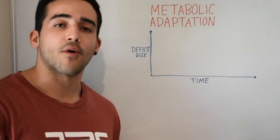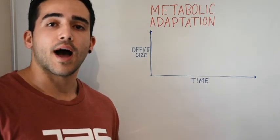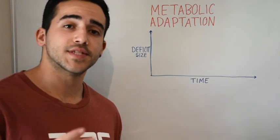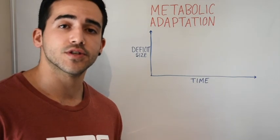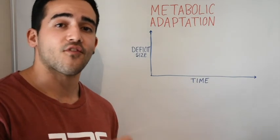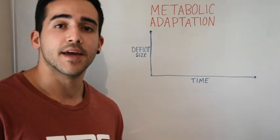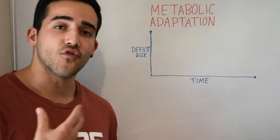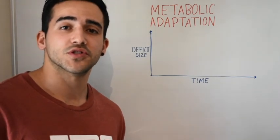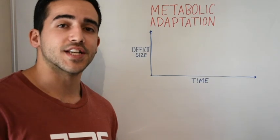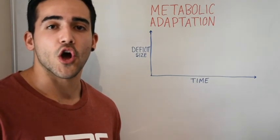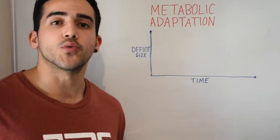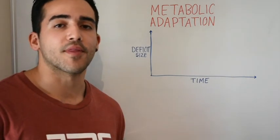The further you move from that set point, the more pronounced the metabolic adaptation will be. If you lose 10 kilos after 10 years of sitting at 80 kilos, then your body is going to be fighting really hard to pull you back up to 80 kilos because that is your body's comfortable weight. If you just want to lose a couple of kilos for summer, then metabolic adaptation isn't probably going to occur to the same magnitude as it would for someone else who is a lot further from their set point.